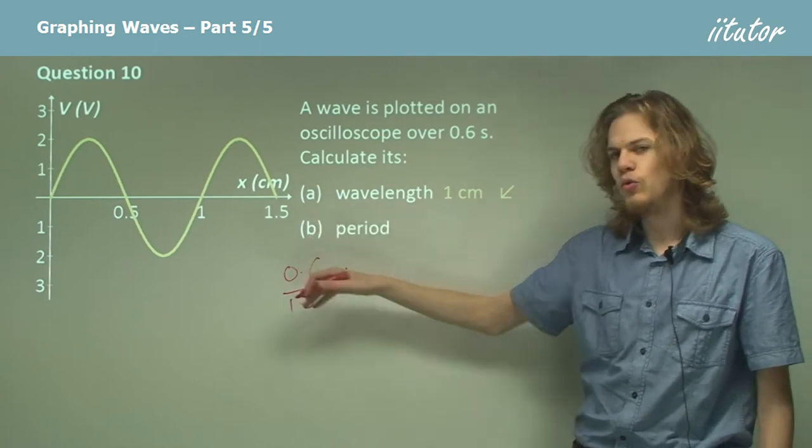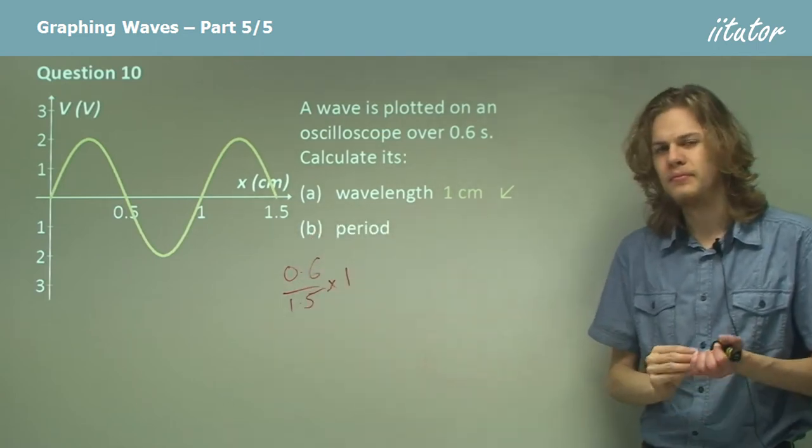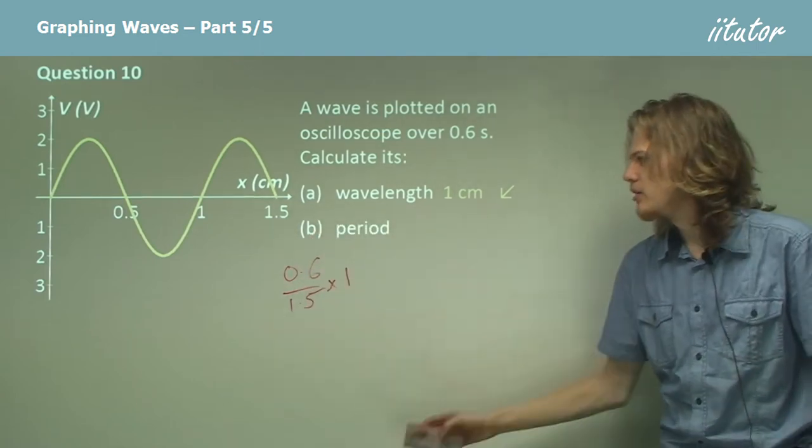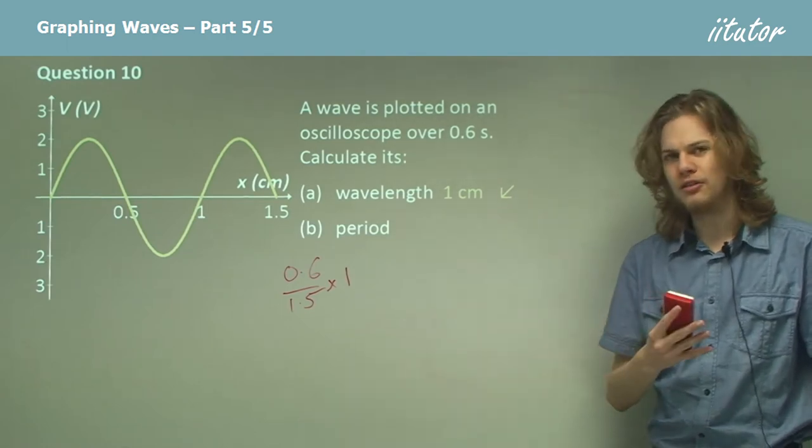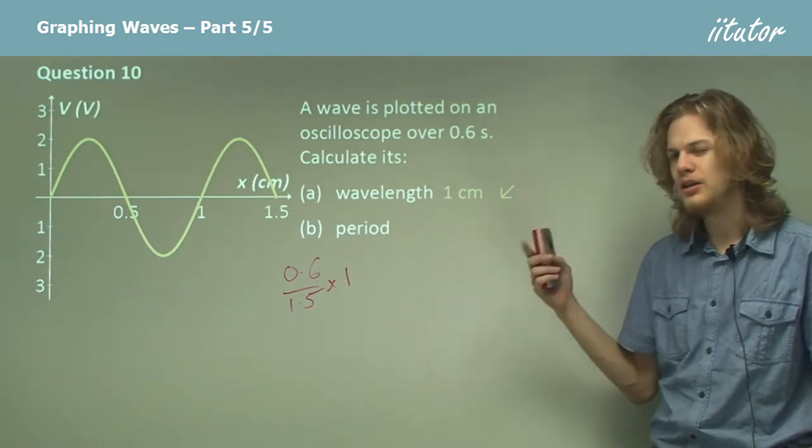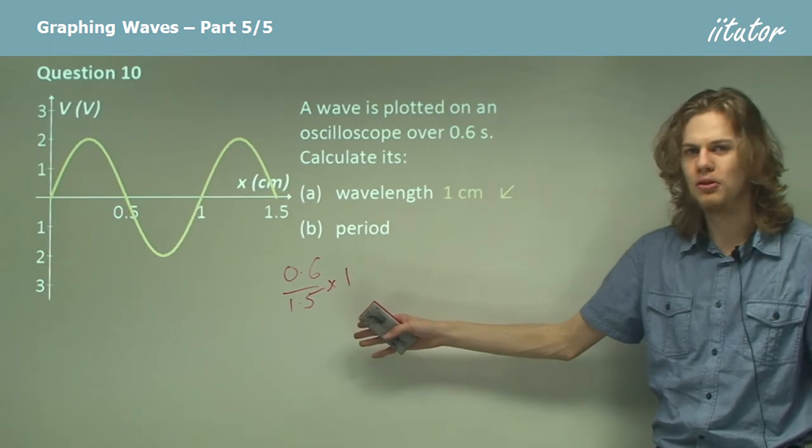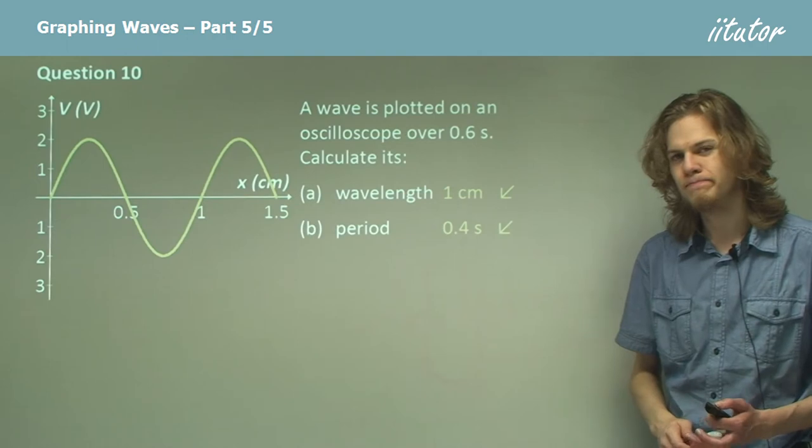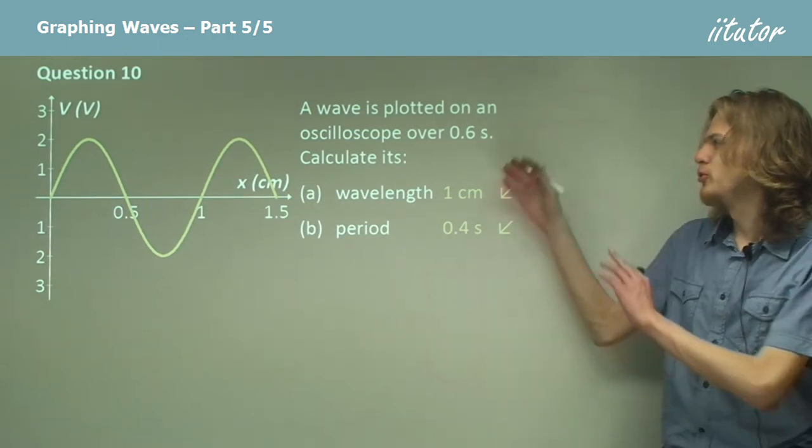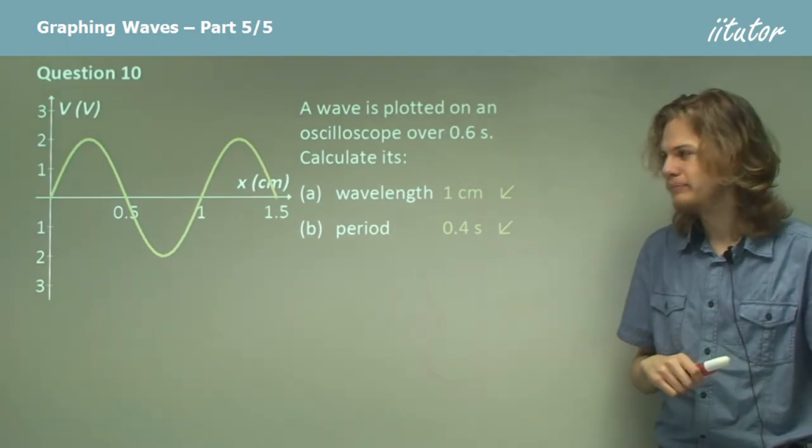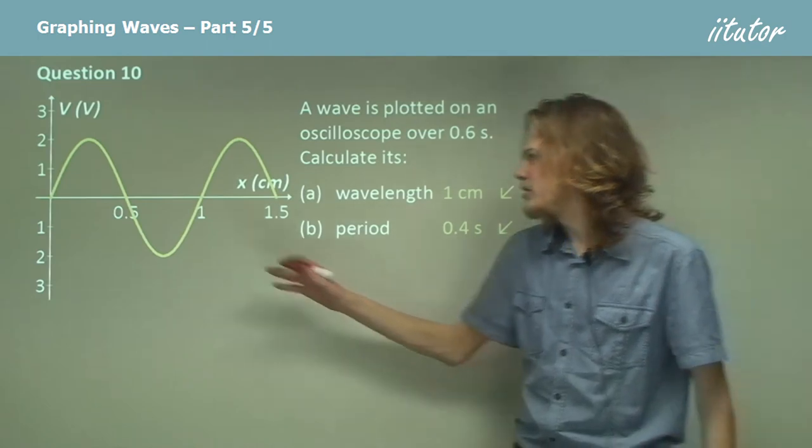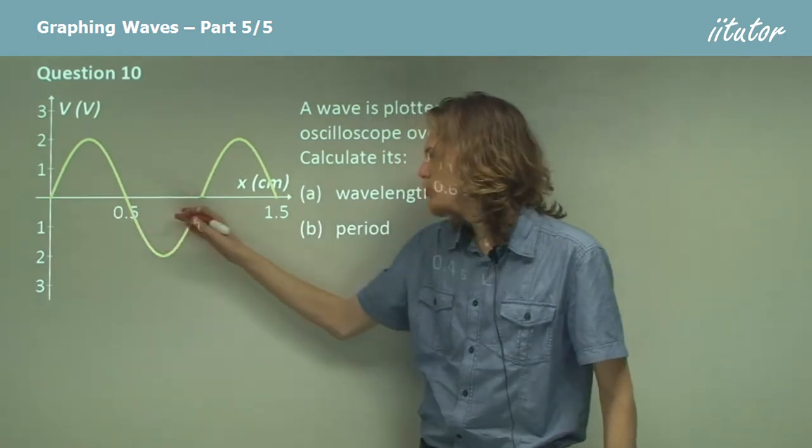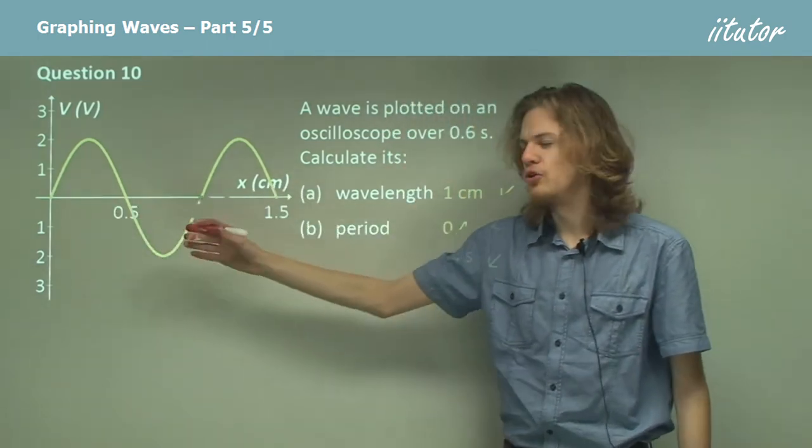So 0.6 over 1.5 will give us the time that it takes for a single wavelength to travel across instead of one and a half wavelengths to travel across. And that of course will just give us 0.4 seconds, which is two-thirds of our original value. We can see in this trace that two-thirds of the trace will be one whole wavelength.